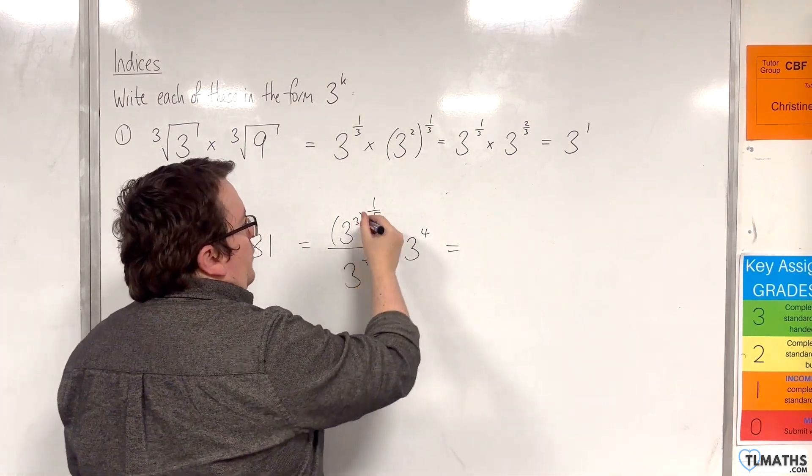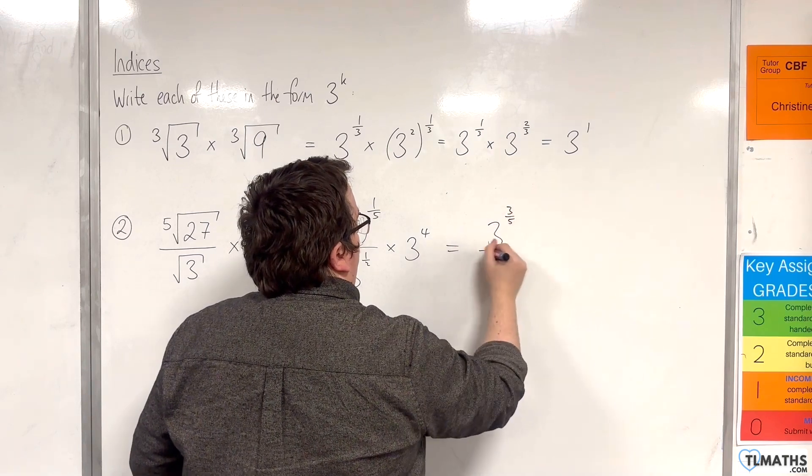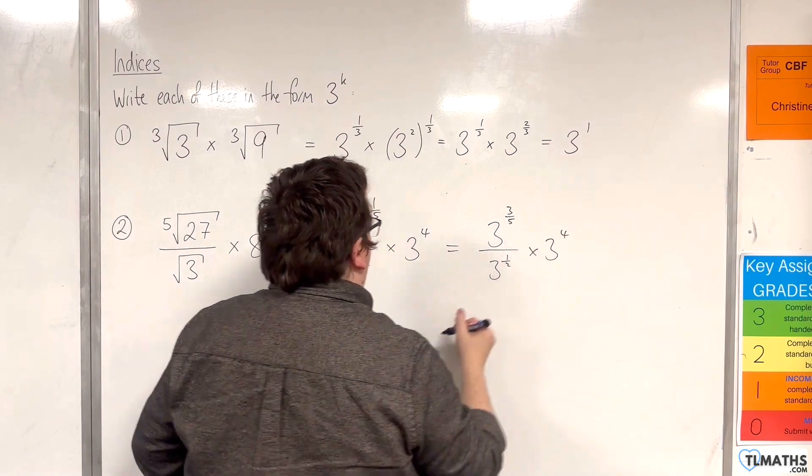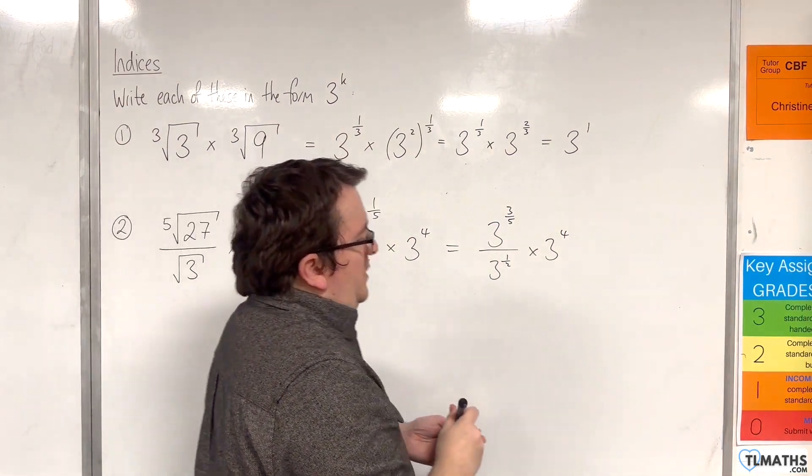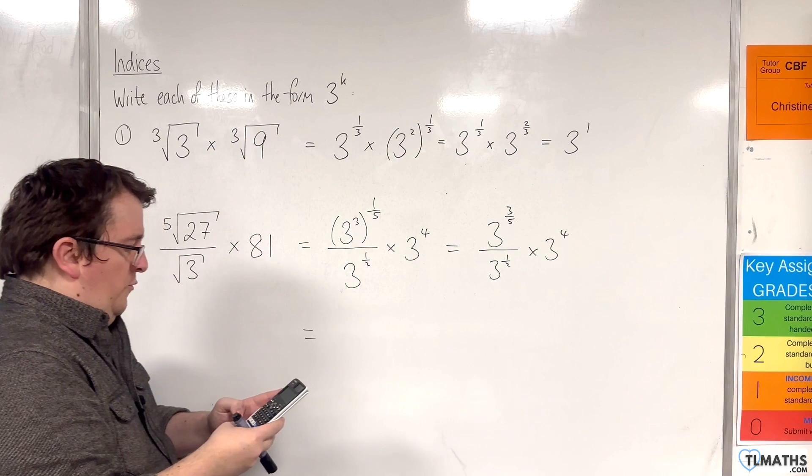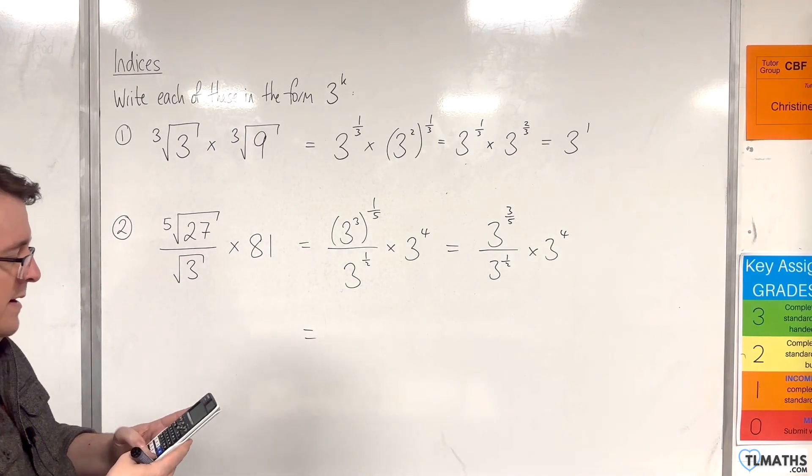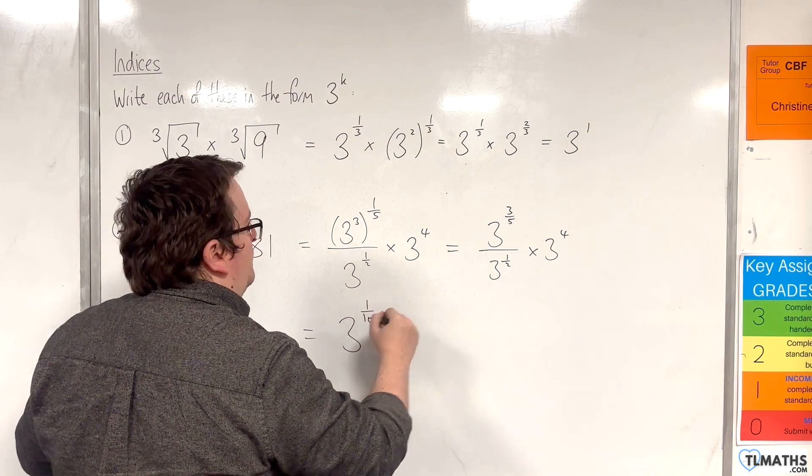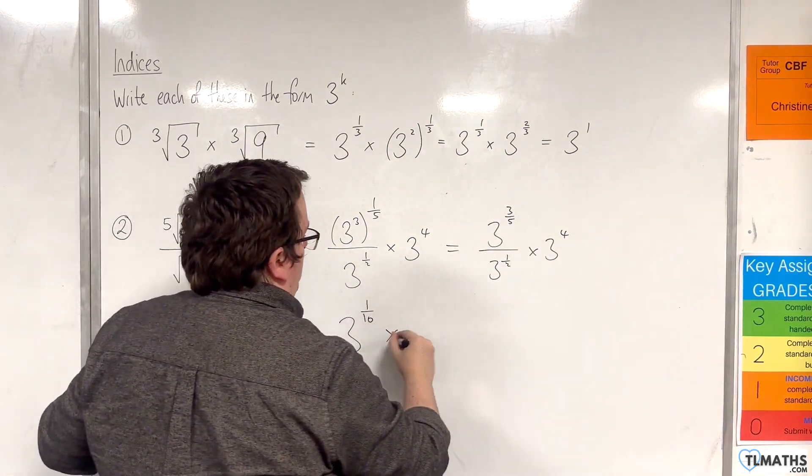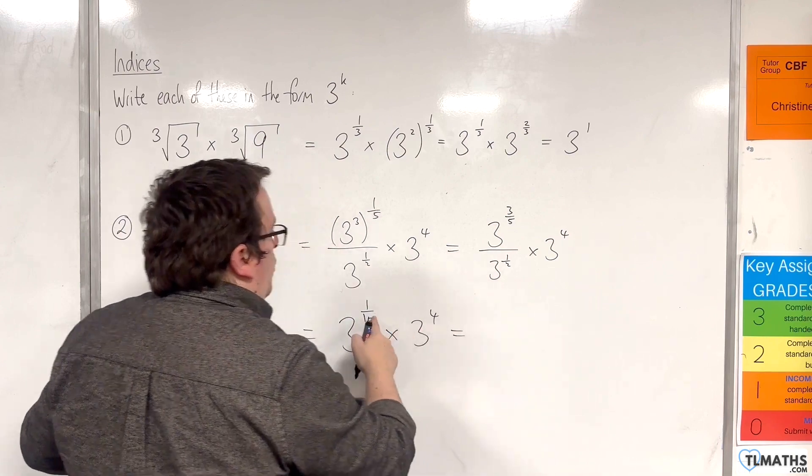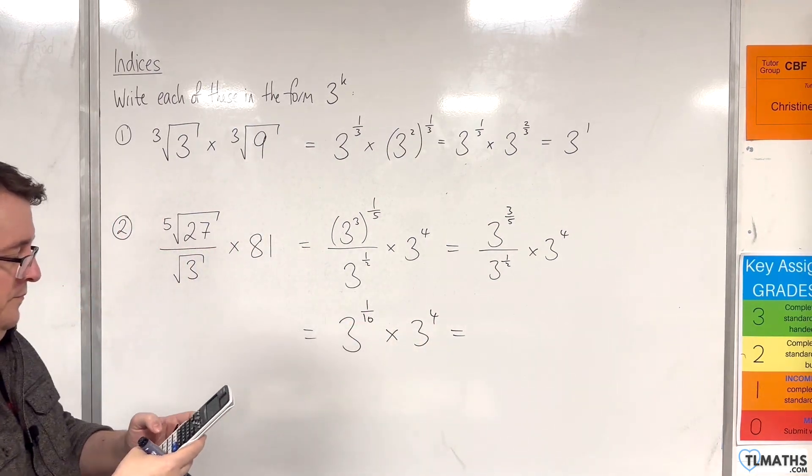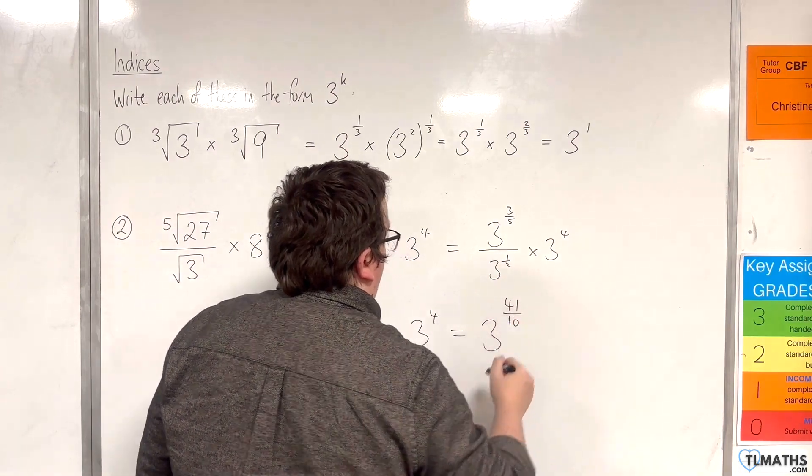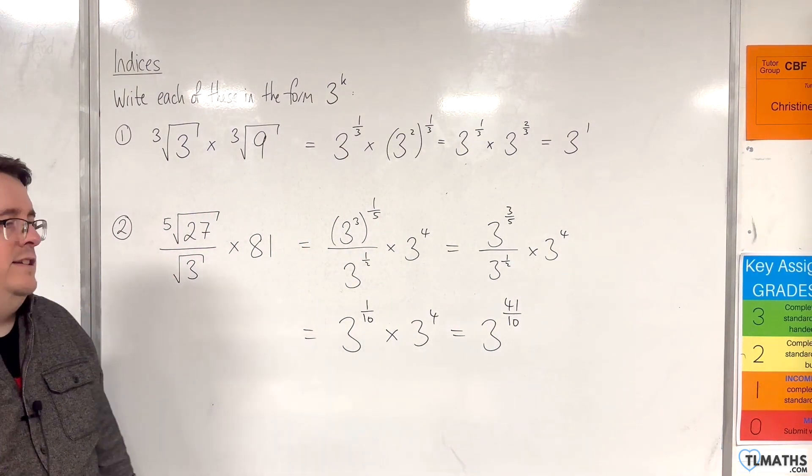So, we have 3 to the power of 3 fifths over 3 to the power of 1 half times by 3 to the 4. Let's deal with that fraction first. We've got 3 fifths take away 1 half, so 1 tenth. So, 3 to the power of 1 tenth, 3 fifths take away 1 half is 1 tenth. And then 1 tenth plus 4 is 41 tenths. And so, that is what we needed to do for that one.